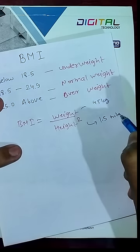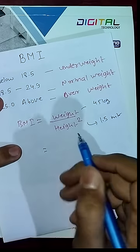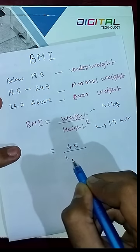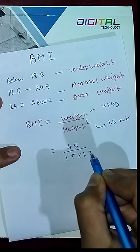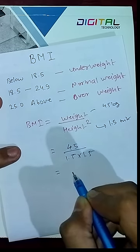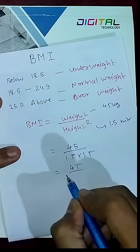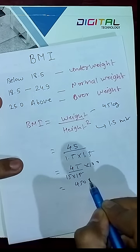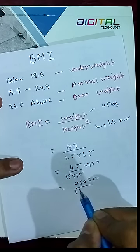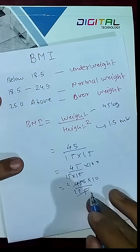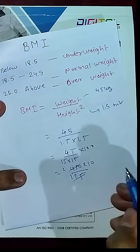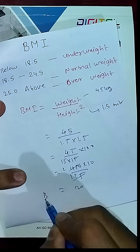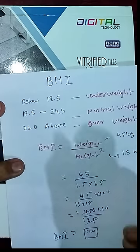So let's calculate the BMI: 45 divided by 1.5 squared. For simplification, 1.5 × 1.5 is written as 15 × 15, giving 225, and 45 × 10 gives 450 upon 225. That simplifies to 2 times, giving a BMI of 20.